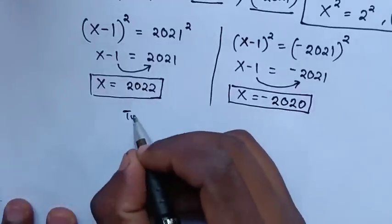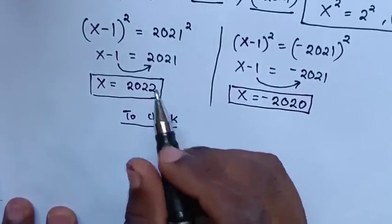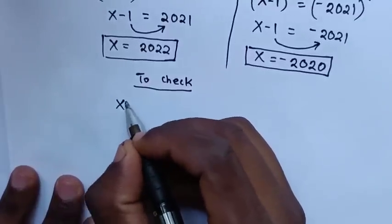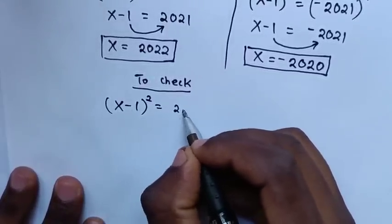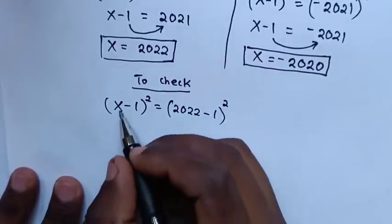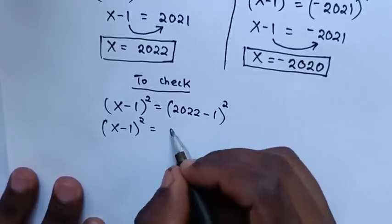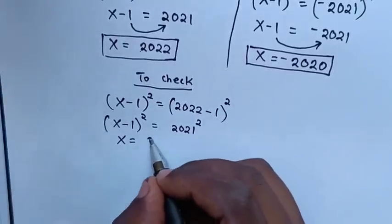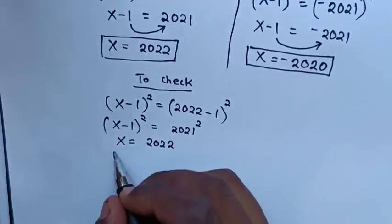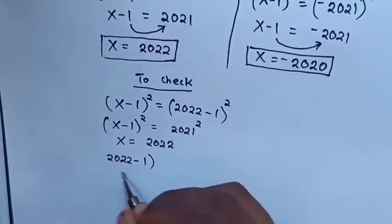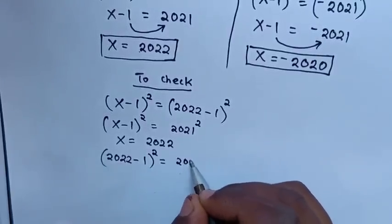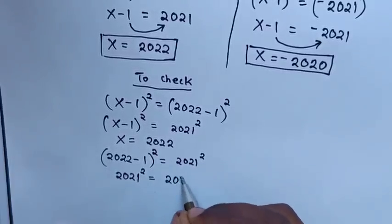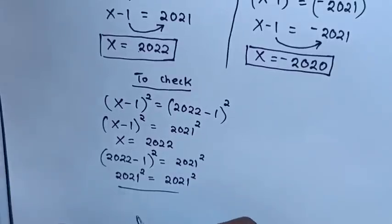Let's check if our answers are correct. From our problem, (x-1)² = (2022-1)² = 2021². For the first answer, x = 2022: substituting gives (2022-1)² = 2021², which is 2021² = 2021². The left side and right side are equal, so it's true.